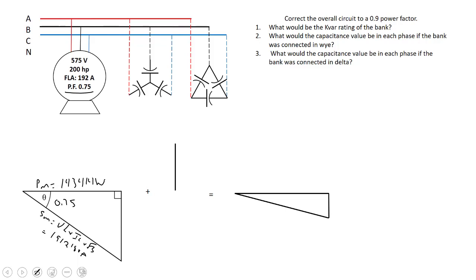Now I can figure out the vertical component of my triangle or the lagging VARs that the motor requires to operate. If I use Pythagorean theorem or if I convert that 0.75 over to angle and use sine times my apparent power, that'll work too. Either way you should get around 126,478 VAR.